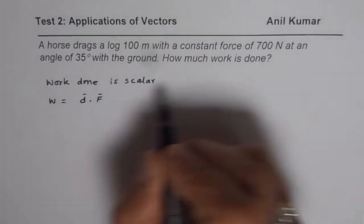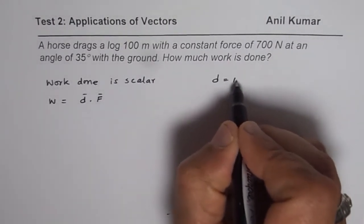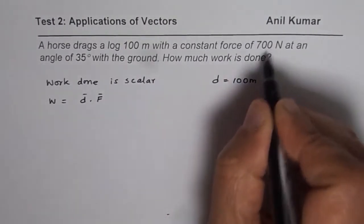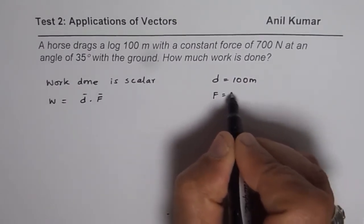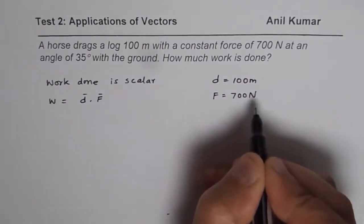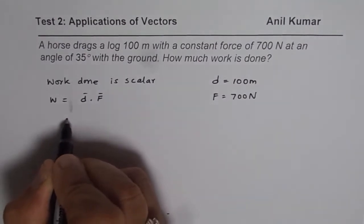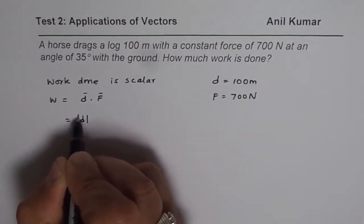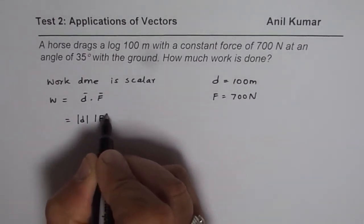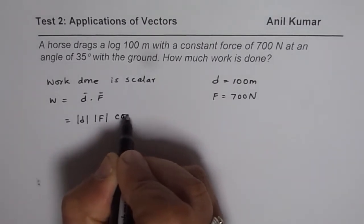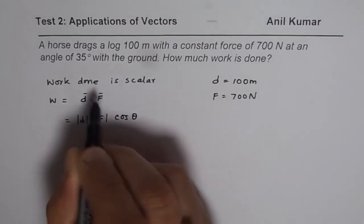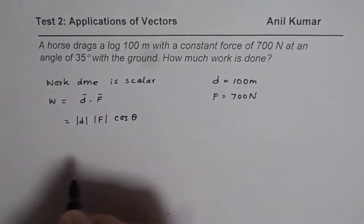In our case, we are given that the displacement is 100 meters and force applied is 700 newtons. So we can write this as magnitude of displacement times magnitude of force times cosine of angle between them. The angle between them is 35 degrees.